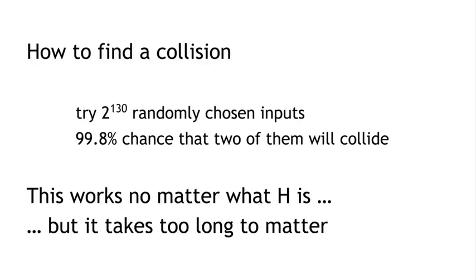This doesn't really matter, because this procedure takes 2 to the 130 steps in order to get to that high probability. We can say that if every computer ever made by humanity was computing since the beginning of the entire universe up to now, the odds that they would have found a collision is still infinitesimally small — so small that it's way less than the odds that the Earth will be destroyed by a giant meteor in the next two seconds. So we know how to find a collision, but this method takes too long to matter.